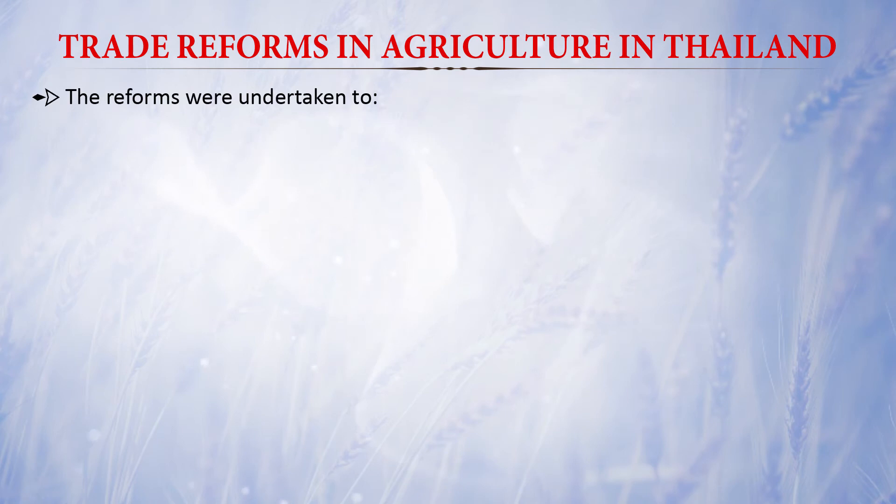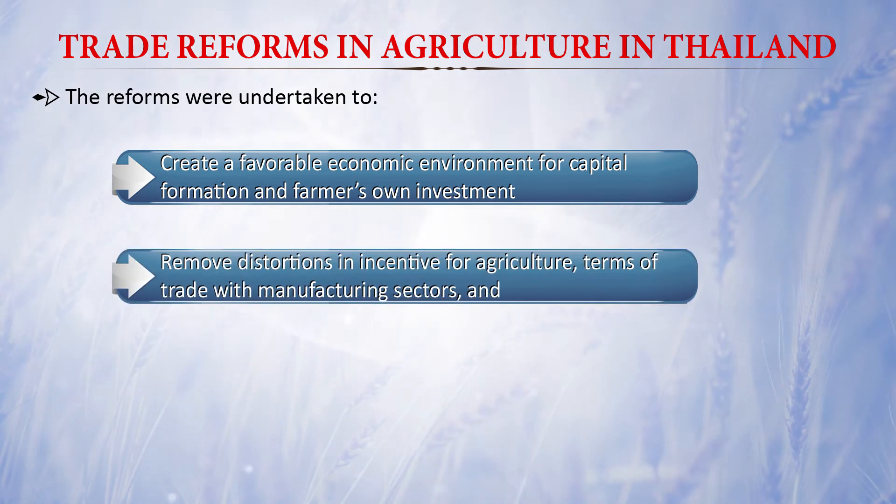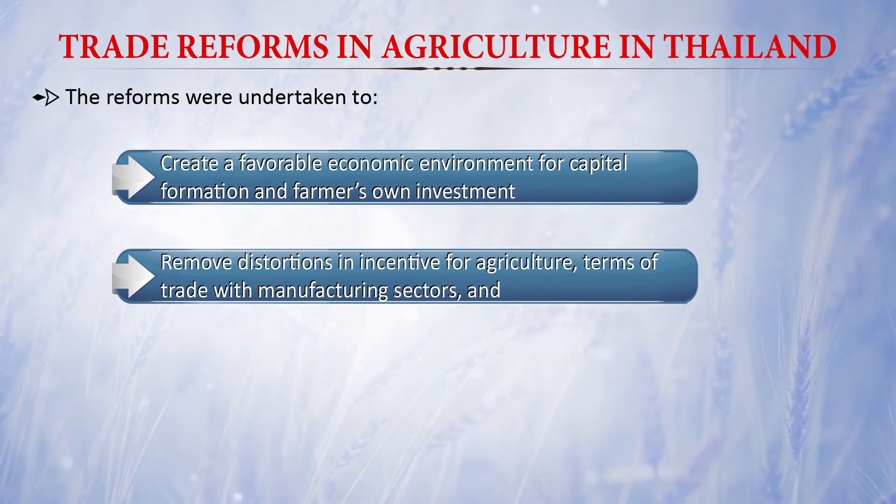After WTO, several measures were adopted in Thailand to support sustainable agriculture, providing environmental and economic benefits to society. Credit subsidies are provided to farmers practicing sustainable agriculture, there is tax reduction on inputs used in sustainable agriculture, and a community revolving fund was developed to support sustainable agriculture growth. Several reforms were undertaken to create a favorable economic environment for capital formation and farmers' own investment, and to remove distortions in incentives for agriculture in terms of trade with the manufacturing sector.